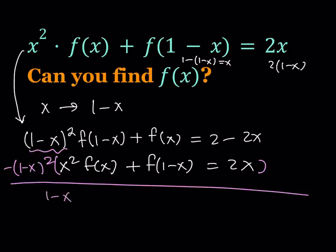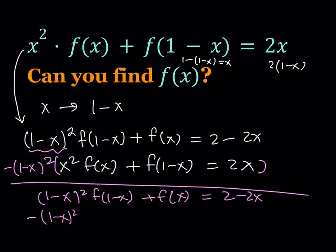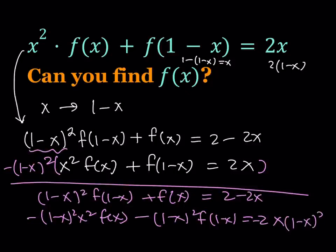We get 1 minus x quantity squared times f of 1 minus x plus f of x. And the second equation is going to give me negative 1 minus x quantity squared times x squared times f of x minus the quantity 1 minus x squared times f of 1 minus x. And that equals 2x. Of course, that's multiplied by that, so it's going to be negative 2x times 1 minus x quantity squared.